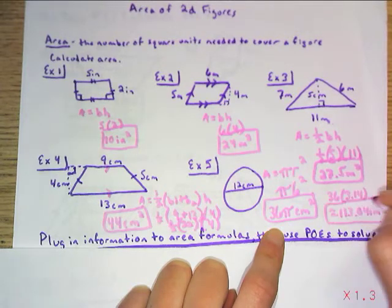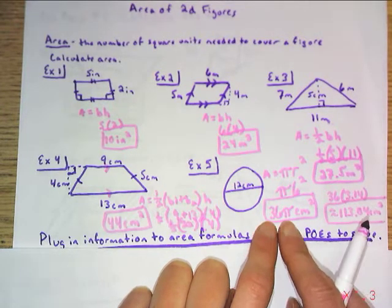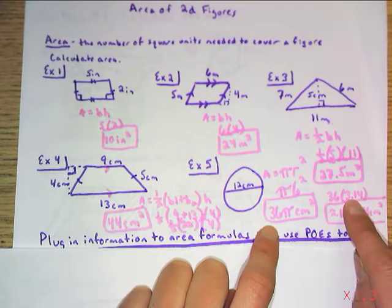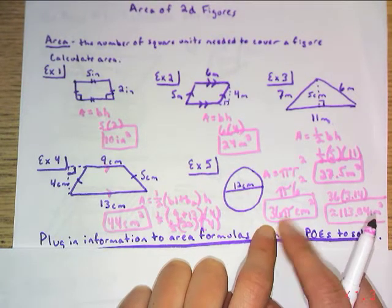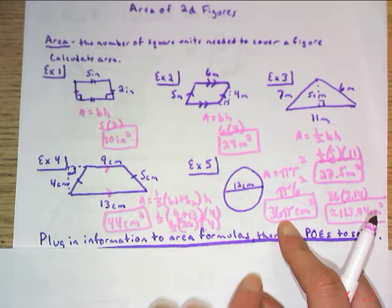So if they use words like approximately or about, that's implying that you're going to use the approximate pi of 3.14. If they don't specify, then it's okay to leave pi in your answer.